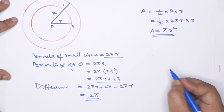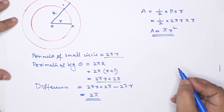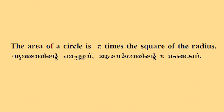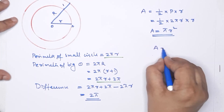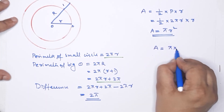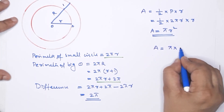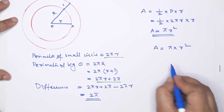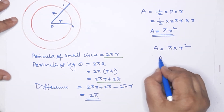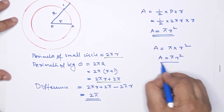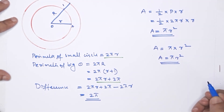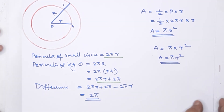Clear? This is the third point. The area of a circle is π times the square of the radius — that is, area = πr².